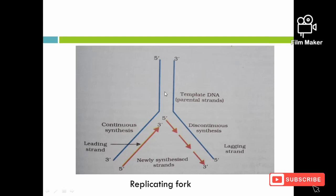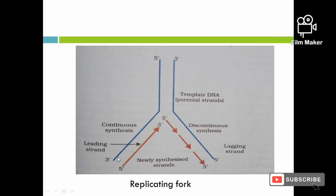DNA gyrase and DNA helicase are two enzymes that unwind the DNA double helical structure into two separate strands. This process of DNA melting creates two strands and forms the replicating fork. The nitrogenous bases — adenine, thymine, cytosine, and guanine — are then exposed for replication.